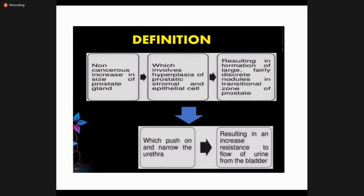Nodular hyperplasia is non-cancerous but increased in size; it includes hyperplasia of both prostatic stromal and epithelial cells. It results in nodules in the transitional zones of the prostate. In hyperplasia, the transitional zone is involved, whereas in carcinoma of the prostate, the percentage of involvement of the transitional zone is much lower. The enlarged prostate pushes and narrows the urethra, causing resistance and obstruction to urine flow from the bladder.